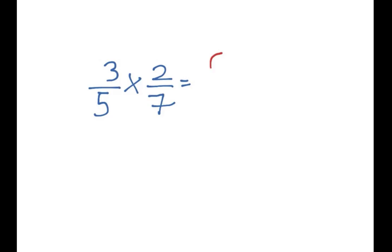So you do 3 times 2, which is 6, and we do 5 times 7, which is 35. And that's it.